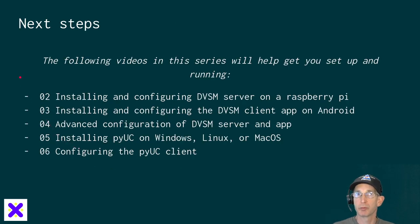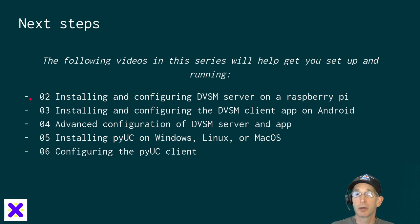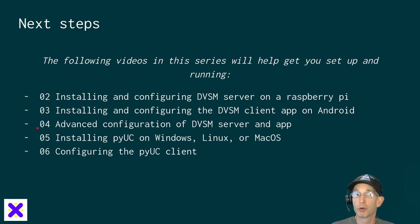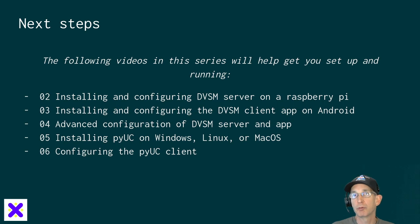The next steps to set up your own DVSwitch Mobile system are to watch the following videos in this series. Video 2 covers installing and configuring the DVSwitch Mobile server on a Raspberry Pi. Video 3 covers installing and configuring the DVSwitch Mobile client app on your Android device. Video 4 goes over advanced configuration of the server and app. Video 5 covers installing the PUC client on Windows, Linux, or Mac OS computers, and Video 6 covers configuring those PUC clients.